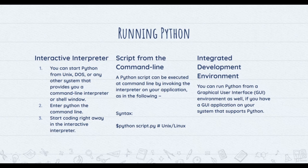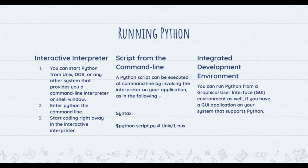The third way is an integrated development environment — you can run Python from a GUI environment if you have a GUI application that supports Python. For example, Unix IDLE is the first Unix IDE for Python, Windows PythonWin is the first Windows interface for Python with a GUI, and on Macintosh, Python along with the IDLE IDE is available from the main website. Make sure your Python environment is properly set up and working perfectly fine.